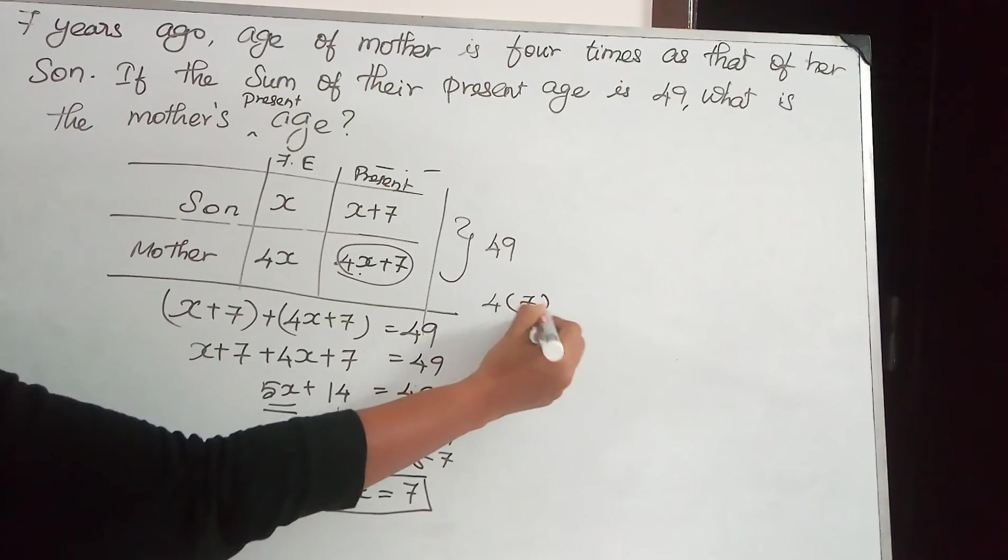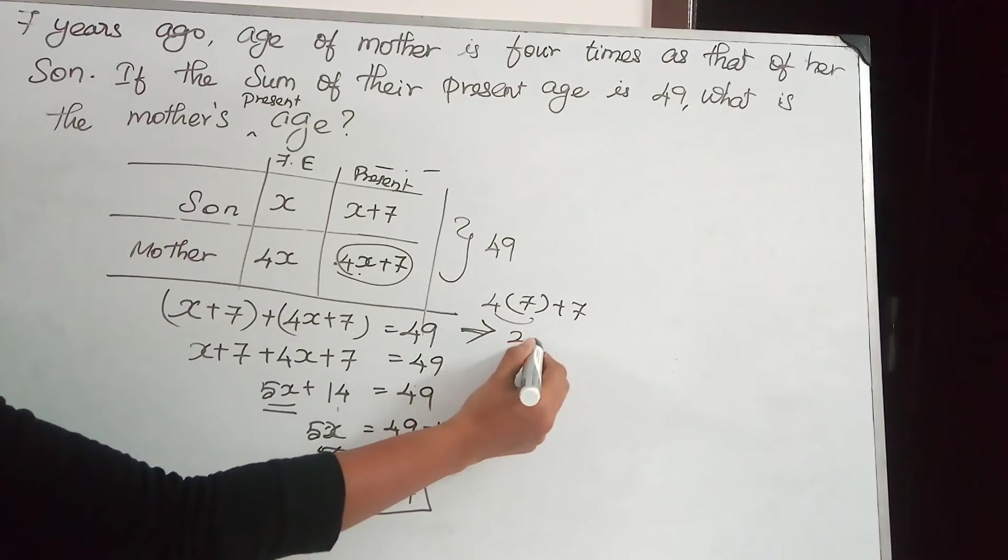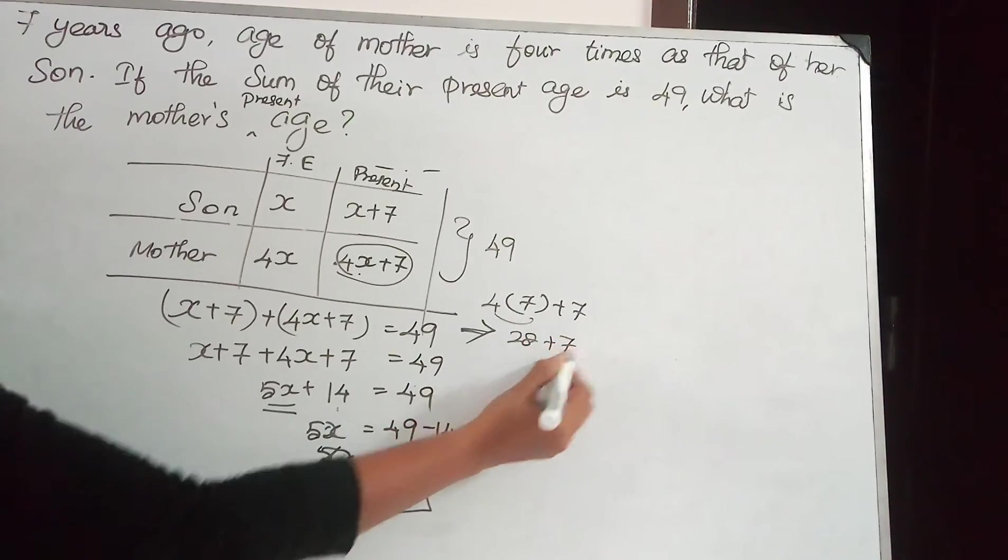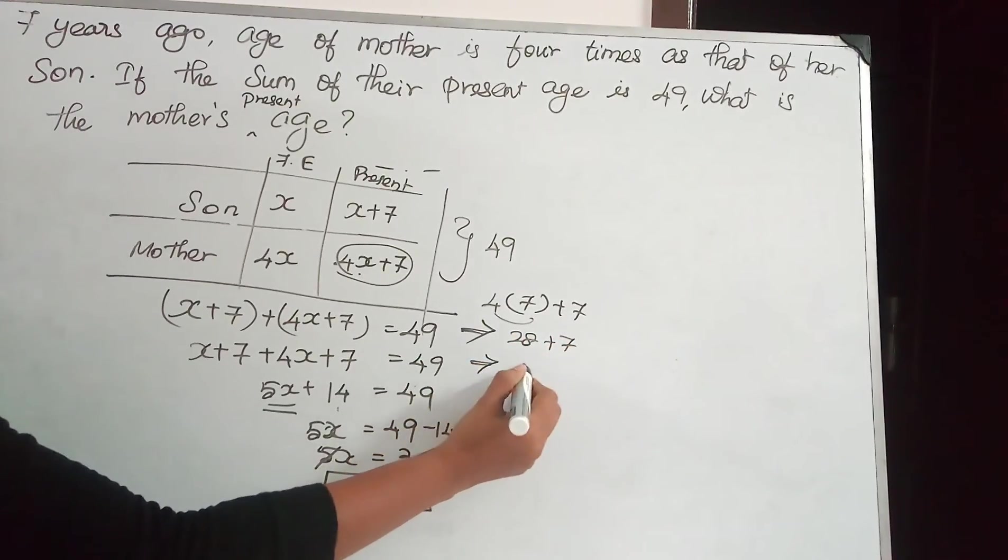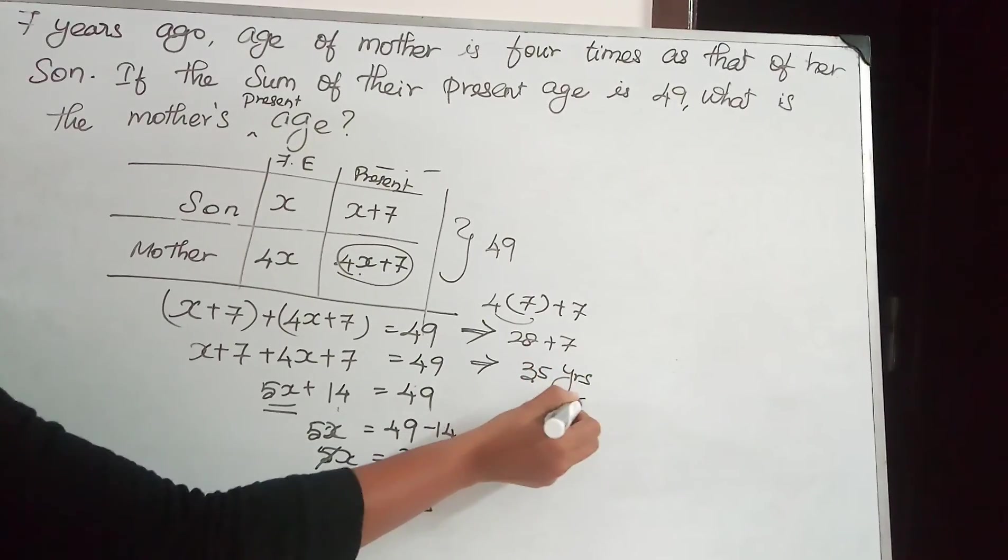Therefore, 4 times 7 plus 7, which gives us first 28, then 28 plus 7. Therefore, the age of mother is 35 years. This is the answer.